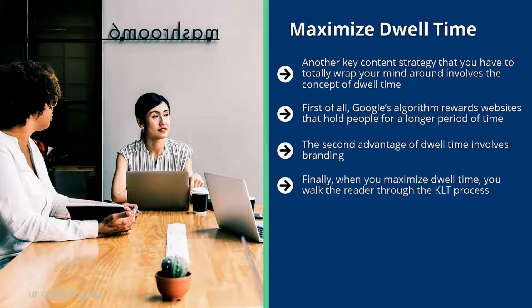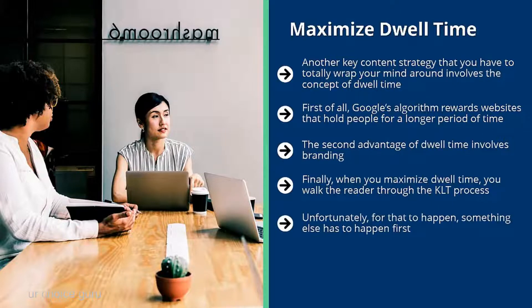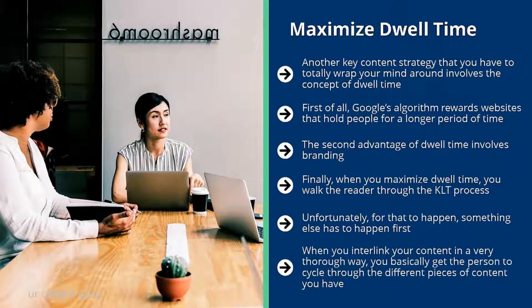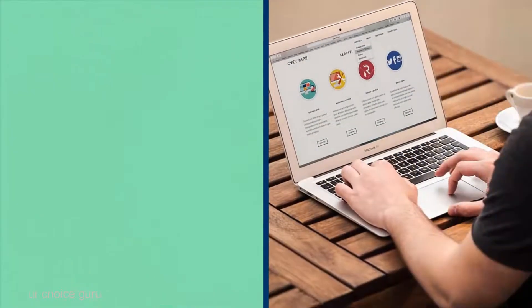When you maximize dwell time you walk the reader through the KLT process — Know, Like, Trust. To get somebody to buy something from you, you must get them to trust you. For that trust to happen they must like the option you put on the table. And for that to happen, they must first feel that you know enough about their problem to like the solution you're pushing. When you interlink your content thoroughly, you get the person to cycle through different pieces of content, building trust that increases the chances they'll convert.